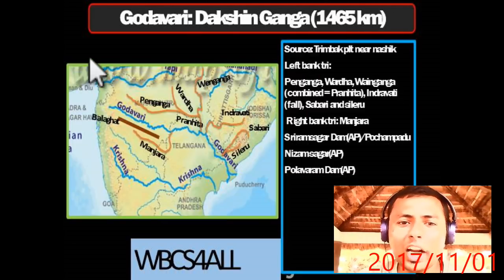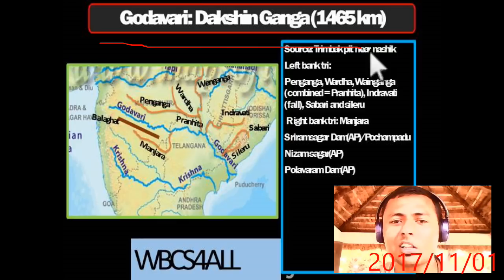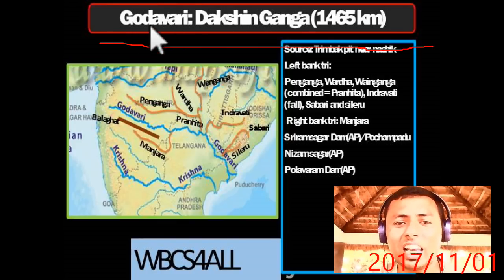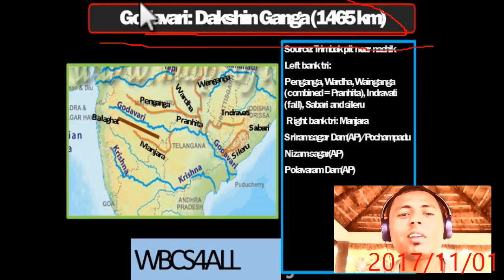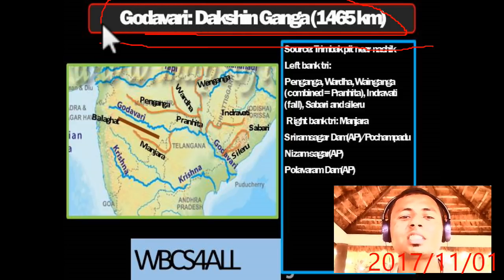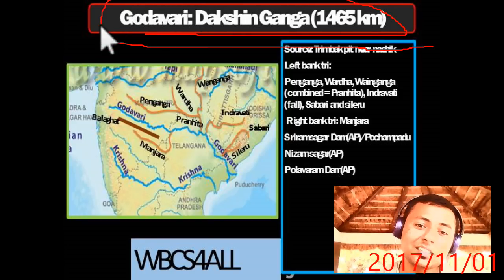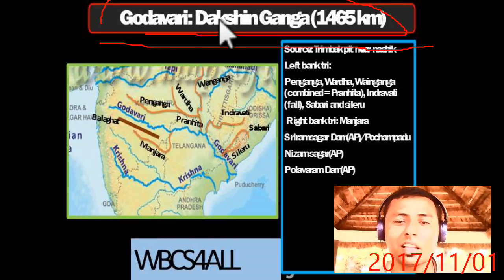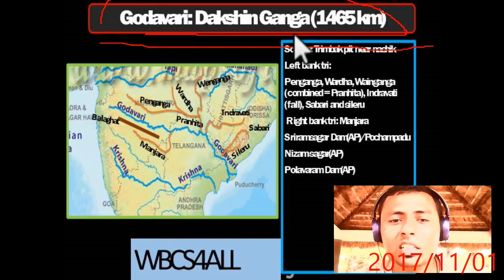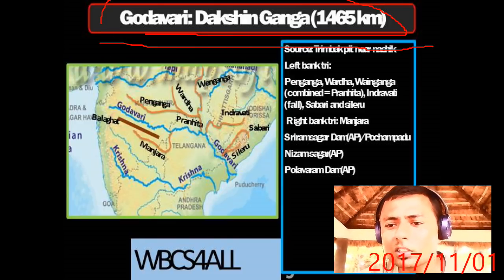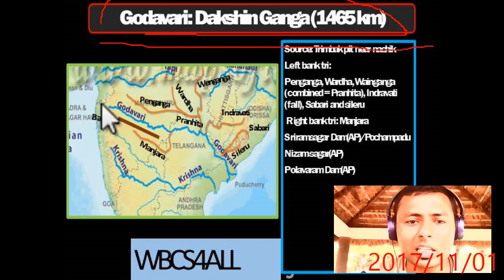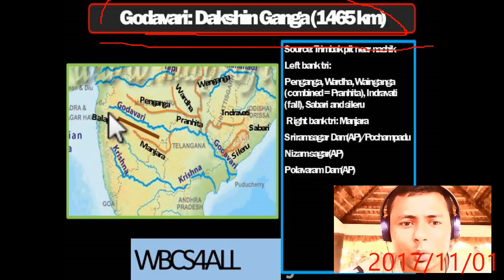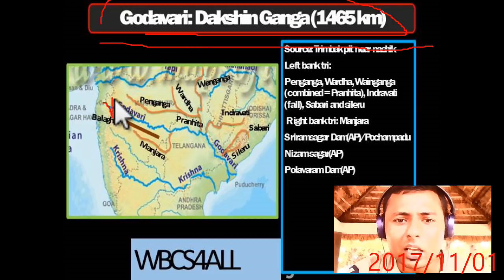The Godavari is also known as Dakshin Ganga because it is the longest river in South India. Its source is the Trimbak Plateau near Nashik. So Nashik is located on the Godavari River.